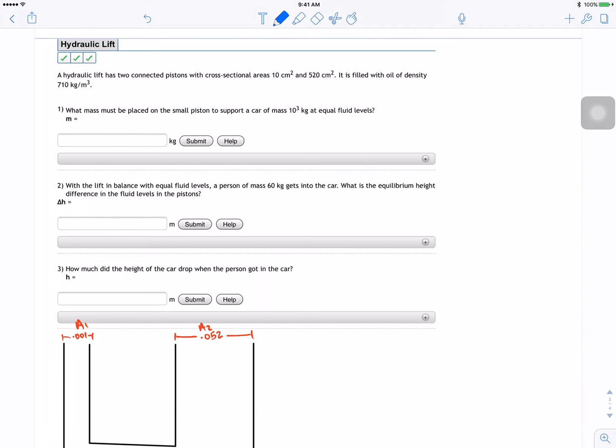So at equal fluid level, that means the pressure at these points are the same. So going from there, so P1 is going to be equal to P2. So P1 is equal to force 1 divided by the area 1 equal to force 2 divided by area 2.